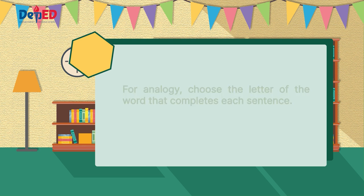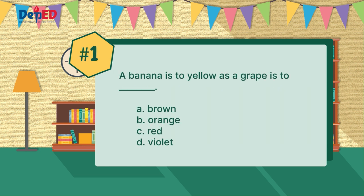Number one: a banana is to yellow as a grape is to blank. Is it letter A, brown? Letter B, orange? Letter C, red? Letter D, violet?